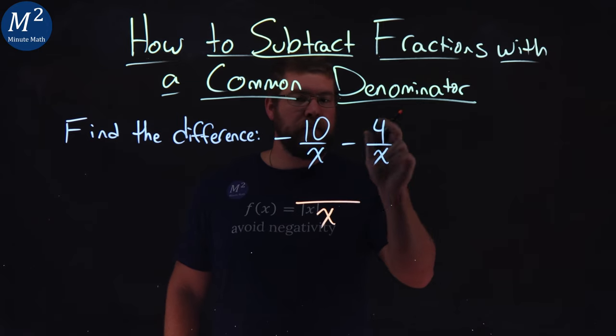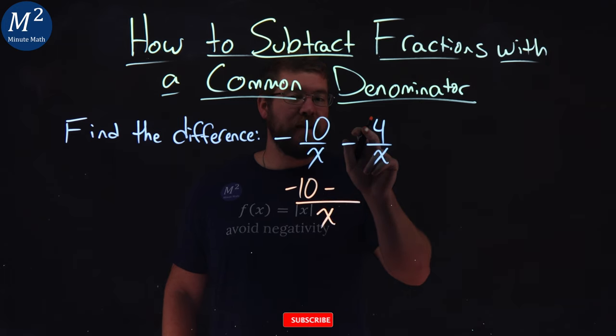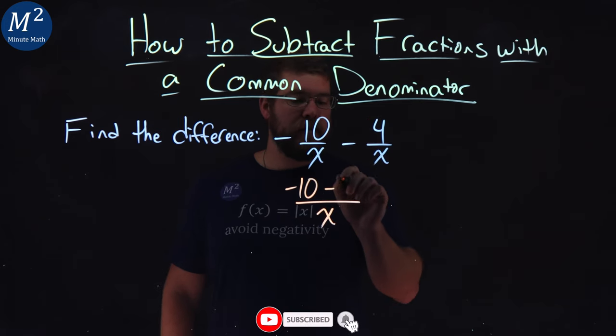Now we have to subtract them. Negative 10 comes down, minus, that minus sign gets applied to the 4, minus a 4.